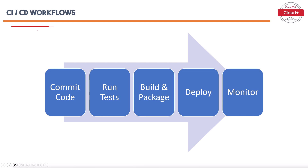The CI-CD workflow defines the steps involved in continuous integration and delivery. A typical workflow is: Commit Code — developers push code changes, triggering the pipeline. Run Tests — unit, integration, and end-to-end tests are executed. Build and Package — the application is compiled and packaged into distributable artifacts. Deploy — the package is deployed to staging or production. Monitor — application performance is continuously monitored, enabling prompt issue detection and resolution.